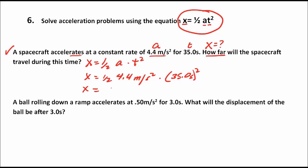That gives an answer of 2,695 meters. You might ask how it works out to meters: when we cancel units, the seconds squared in the denominator of the acceleration unit cancels with the seconds squared from the time term, leaving meters. So the spacecraft will be displaced — or travel a distance of — 2,695 meters while accelerating.